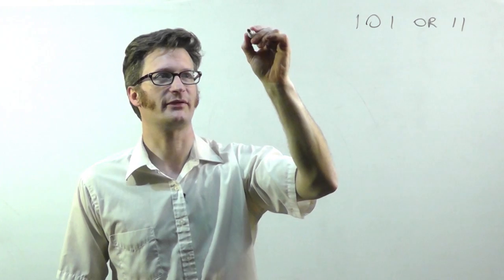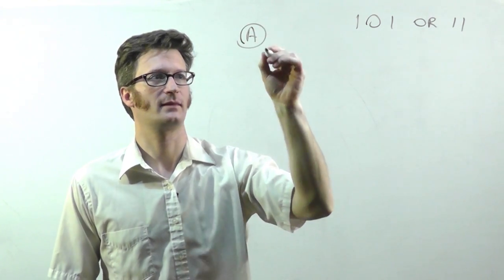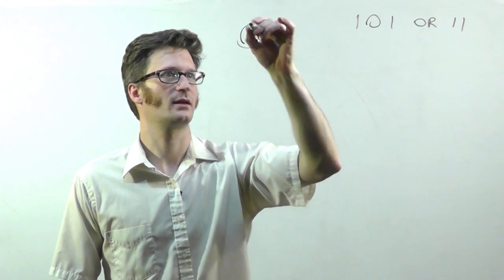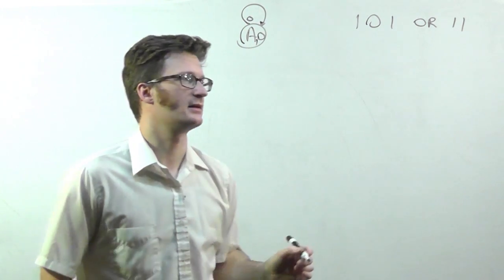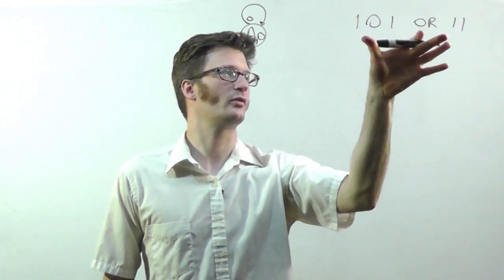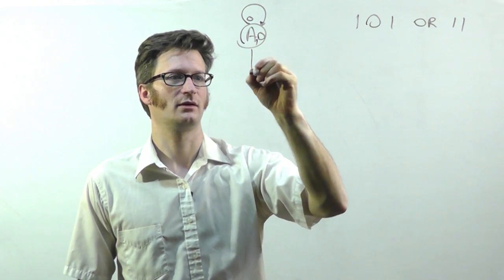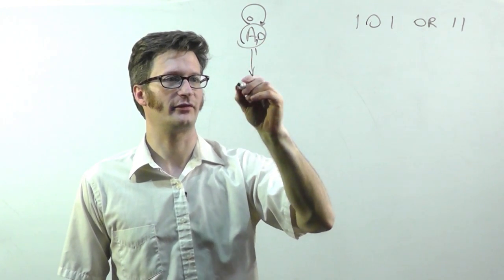So we'll start off with state A, output of 0. If we detect 0, we go right back to state A. If we detect 1, because both of these start with 1, we advance forward to state B.